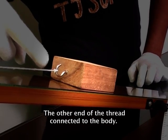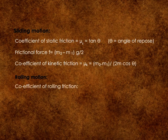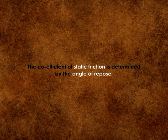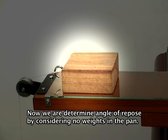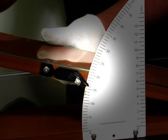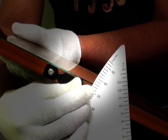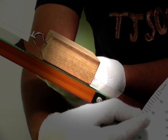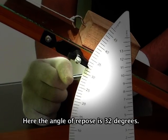The other end of the thread is connected to the body. Now we are determining the angle of repose by placing no weights in the pan. The angle of repose is found to be 32 degrees.